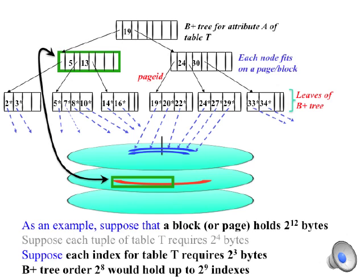At the bottom I give you some idea of units. A block is a sizable chunk of memory, perhaps 2 to the 12th bytes or more, depending on disk technology. Suppose each index requires 2 to the 3rd bytes, then we could store up to 2 to the 9th indices on each block, thus a B-plus tree of order 2 to the 8th would allow these 2 to the 9th indices to be stored on one node if the node is equivalent to a block.